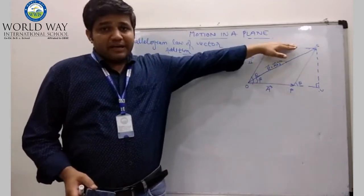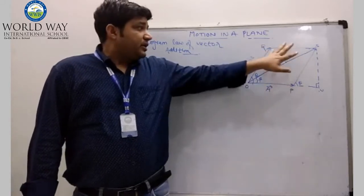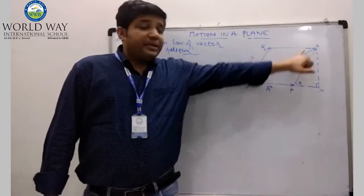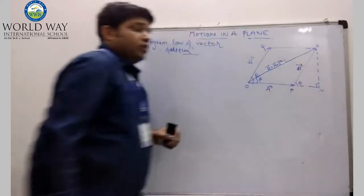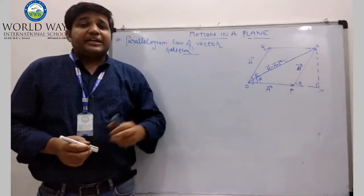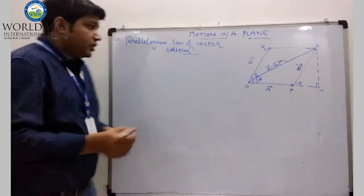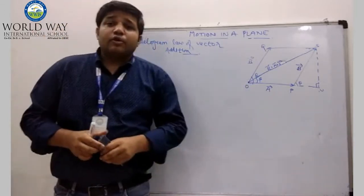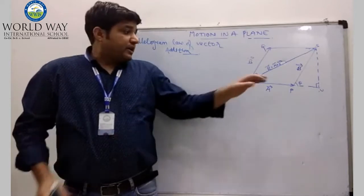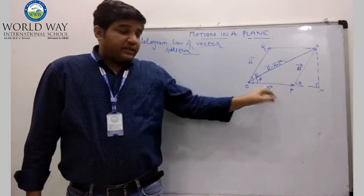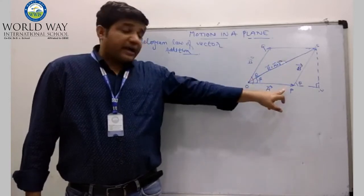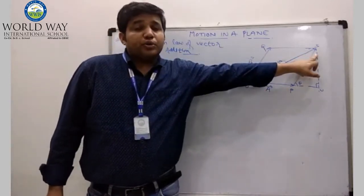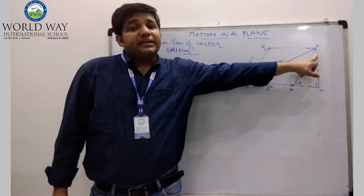Opposite sides are parallel and equal. So OP and QS are equal. We represent vector A along OP, and OQ and PS represent vector B. In this, we have to derive the resultant as well as the direction. According to the statement of the parallelogram law of vector addition: if two vectors have adjacent sides taken from a common point, then both have magnitude as well as direction, and the resultant vector also represents magnitude as well as direction.